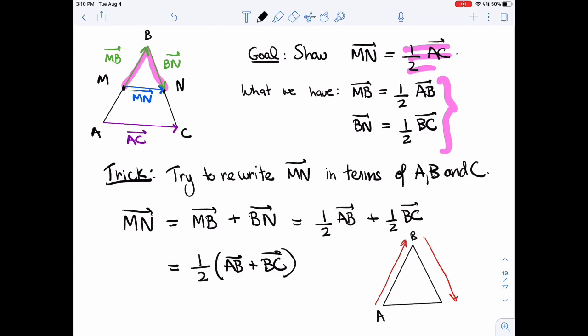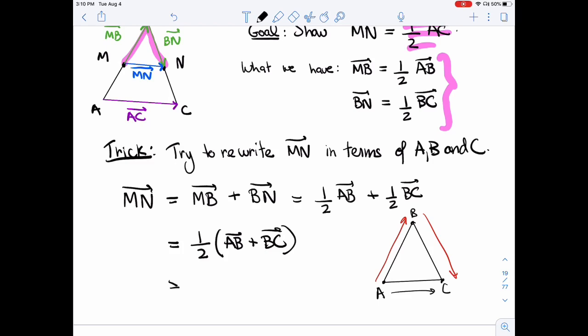If I take AB plus BC, this is something we've done a few times. I'm going slowly just because I found these are hard at first. So A to B, B to C. Well, that's the same thing as A to C, right? You start at A and you end up at C. So this is half of AC.